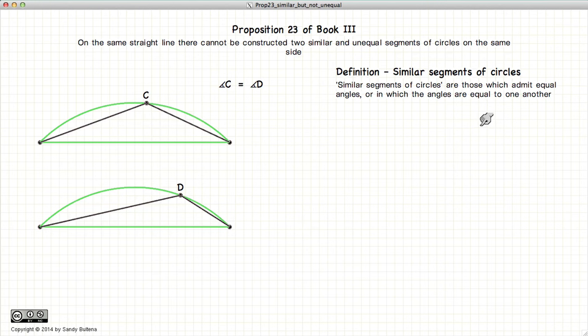But before we begin, I need to define what a similar segment of a circle is. So if we have two segments of circles, or a circle segment, if the angle at C is equal to the angle at D, these two circle segments are similar. That doesn't imply that they're equal, just that they are similar.